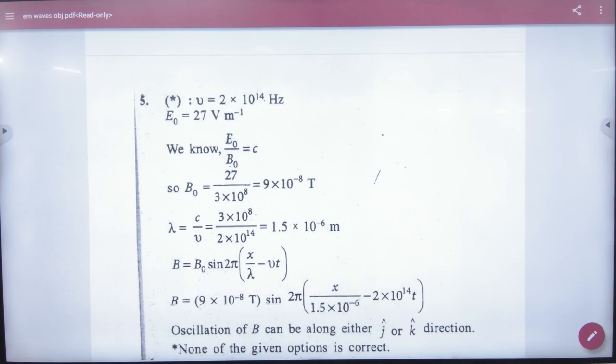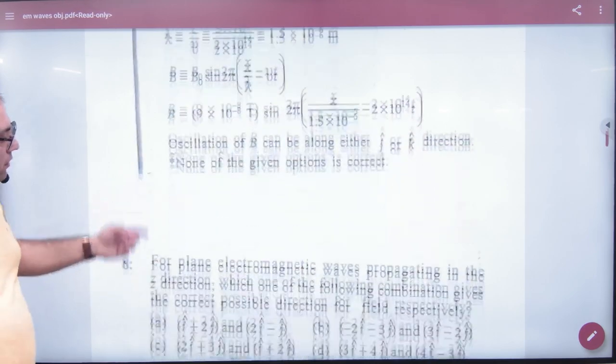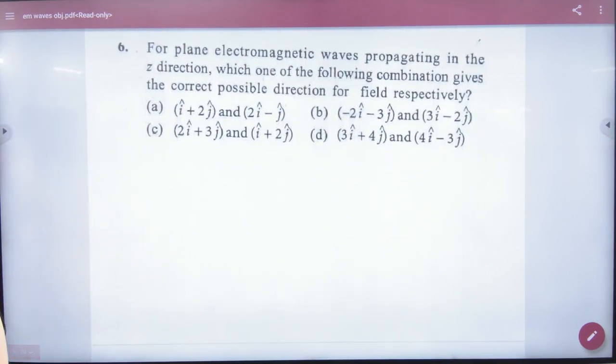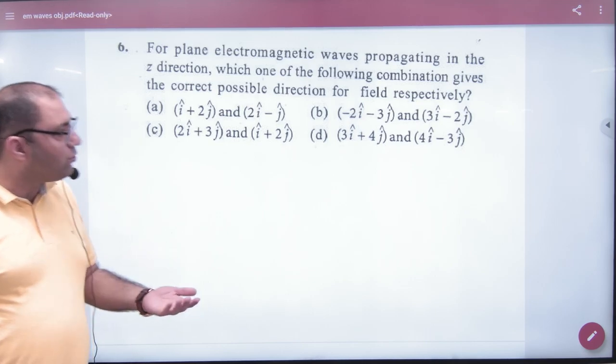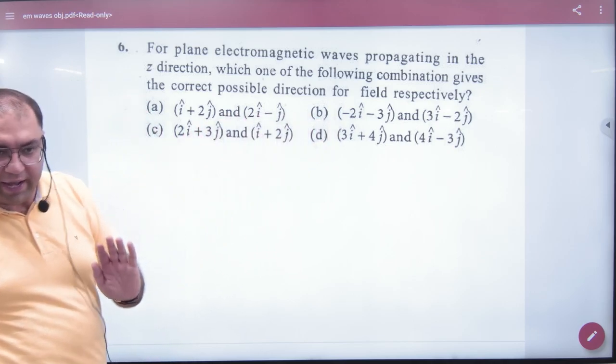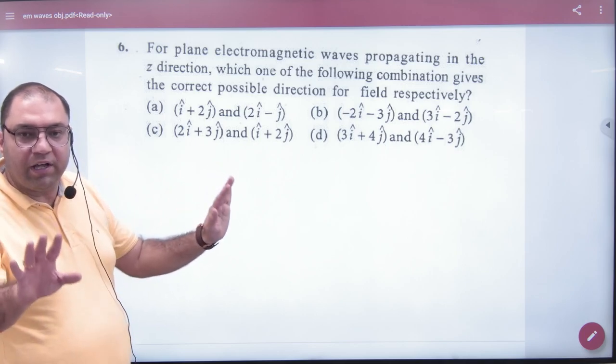Next, a very big question. NEET and mains are a jabardust question. It should be made in one minute. I thought you have a chance to get the wrong answer. I thought that you have the values of electric and magnetic field given and direction given. Wave propagation given in Z. You should tell what values of electric magnetic are correct.